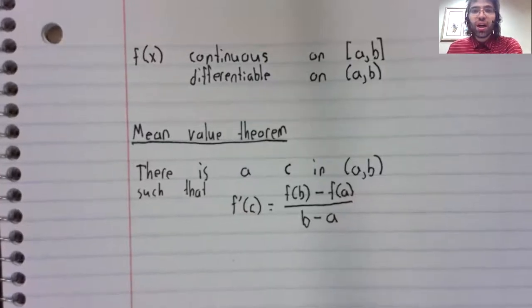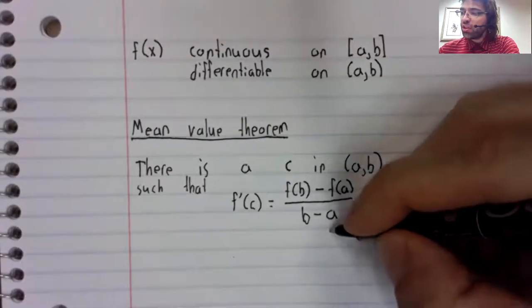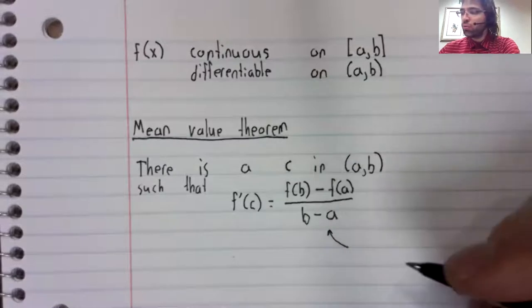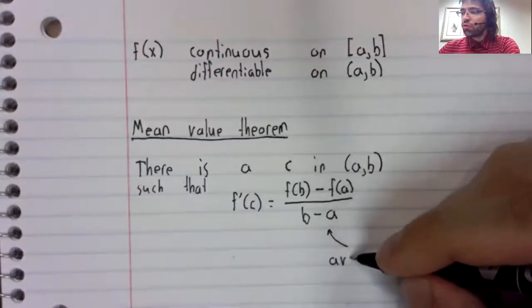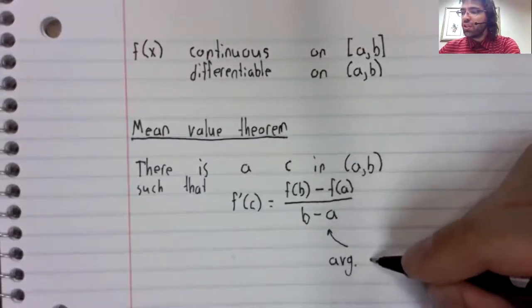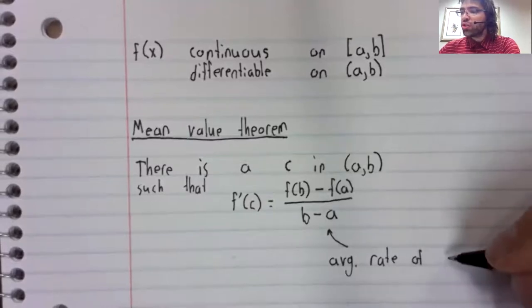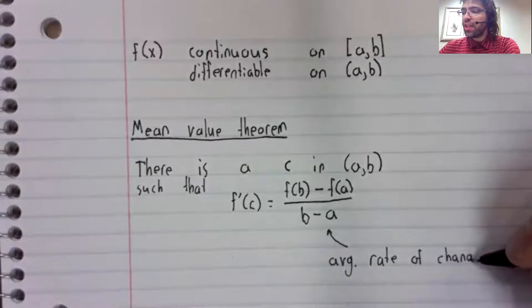This time, instead of the derivative at c being zero, the derivative at c is the average rate of change.